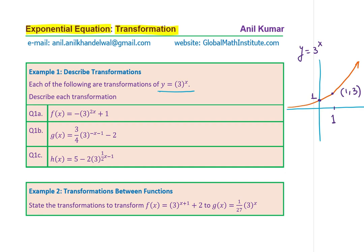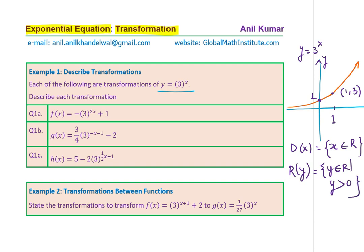Before going further, we should also look into the domain and range of these functions. The domain is x belongs to all real numbers. As for the range, y belongs to real numbers, however y is greater than 0, where y equals 0 is the horizontal asymptote — the function approaches the x-axis but never touches it. Sometimes we also add questions to find domain and range — it could be a part of this question.